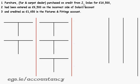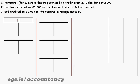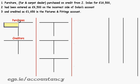Furniture purchased on credit from Dolan. Given we're a furniture and carpet dealer, furniture is purchases on credit from Dolan, so we will need a purchases account. Dolan is a creditor, so we'll need a creditor's account. We're expected to know that this is the site for purchases — 16,500 — which double entries down to here.